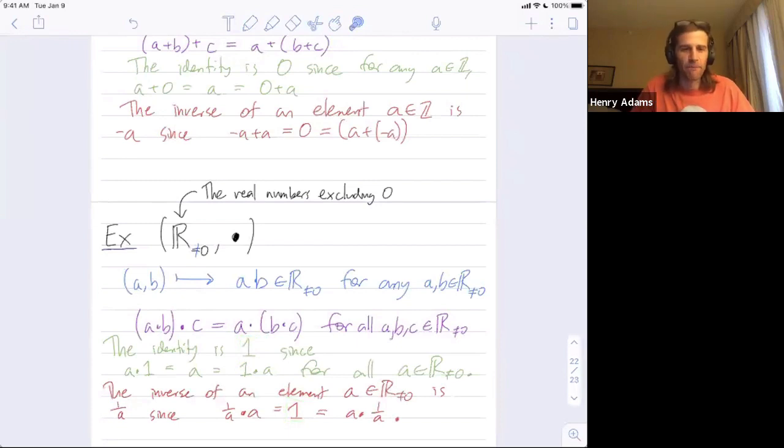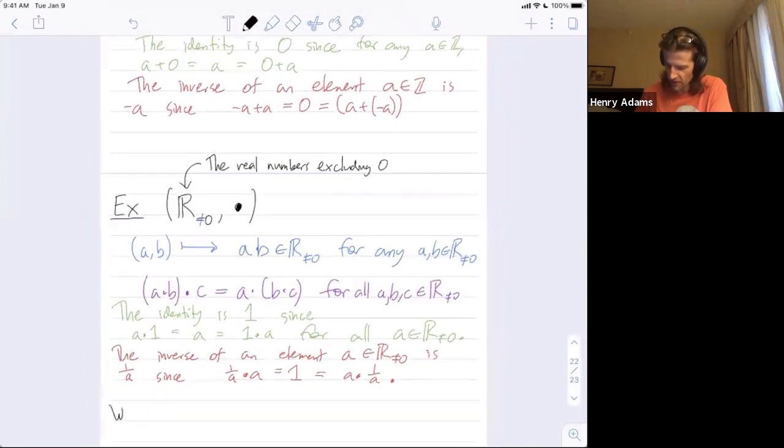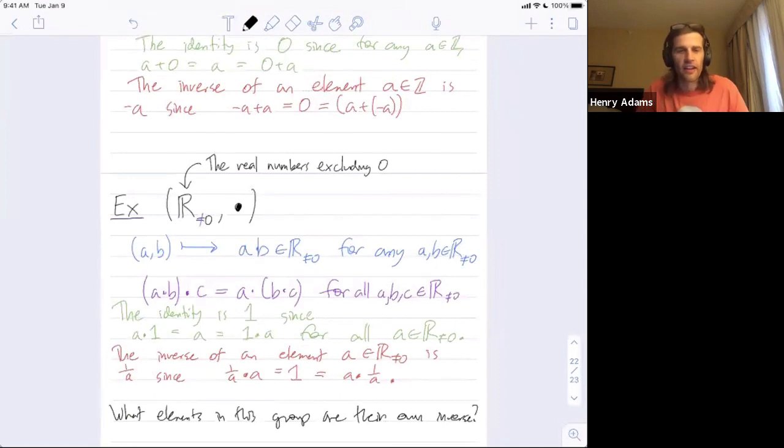Yeah some elements have themselves as inverses. So there are exactly two elements in this group that are their own inverse. Can anyone think of one or both of those elements? What elements in this group are their own inverse? Any guesses?